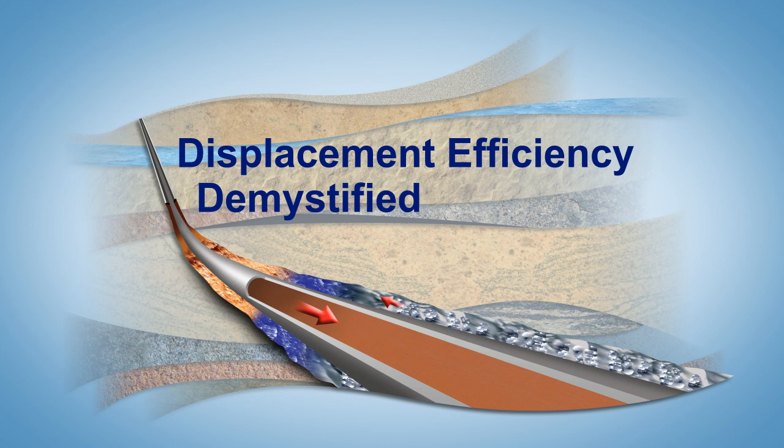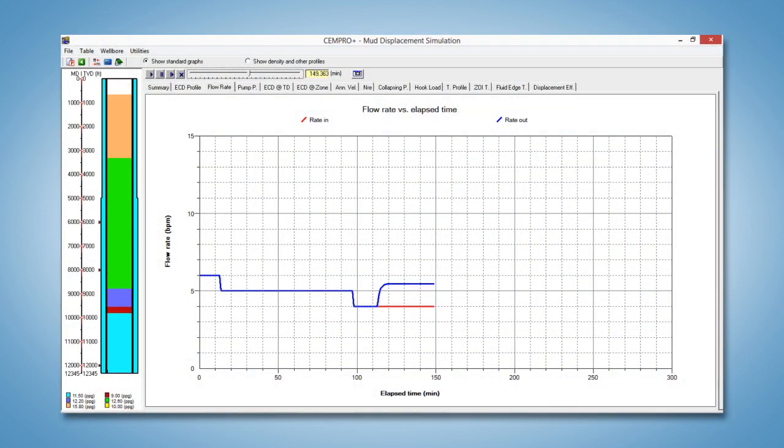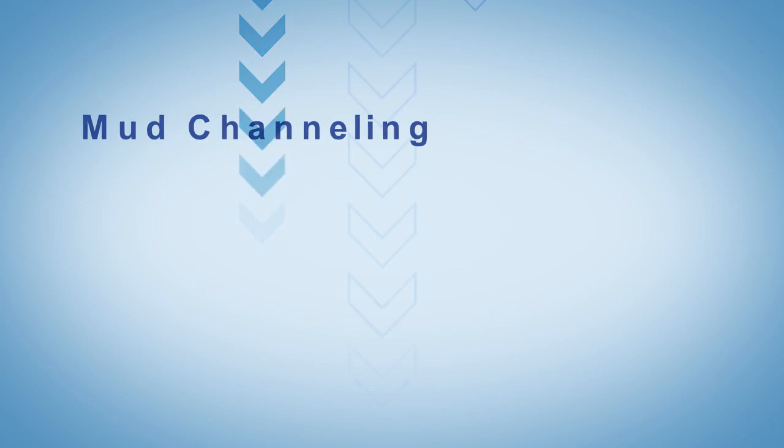The traditional assumption on fluid displacement is that there is a clear interface separating the displaced fluid from the displacing fluid. This approach is fine as far as hydraulics calculations are concerned. However, during a cement job there are more things to consider. We also want to minimize mud channeling and slurry contamination.